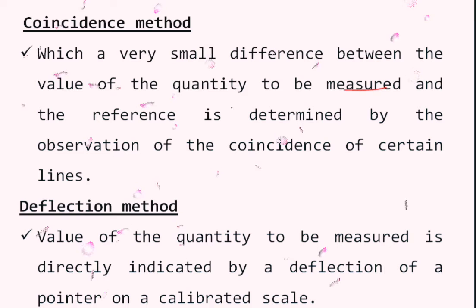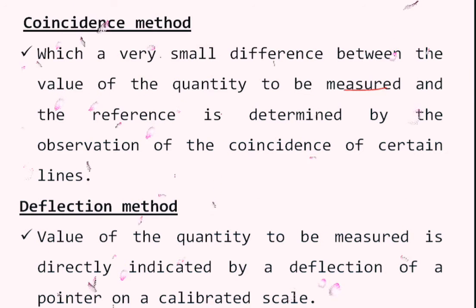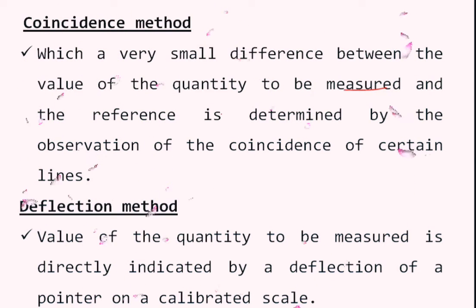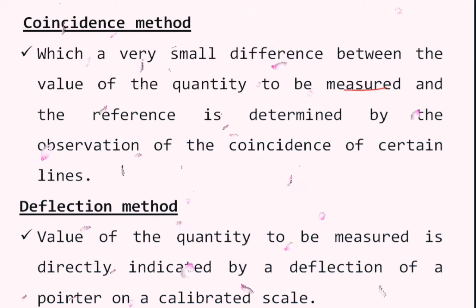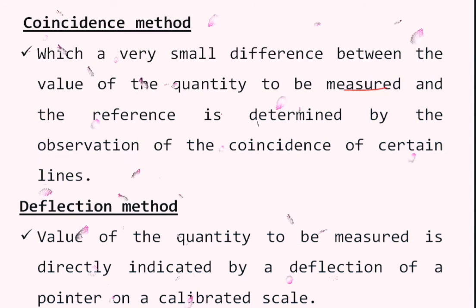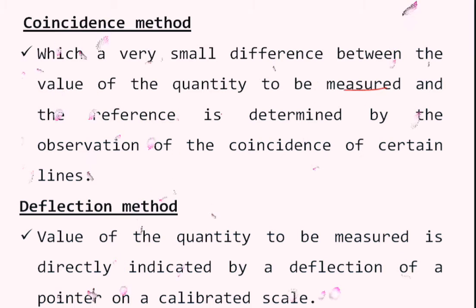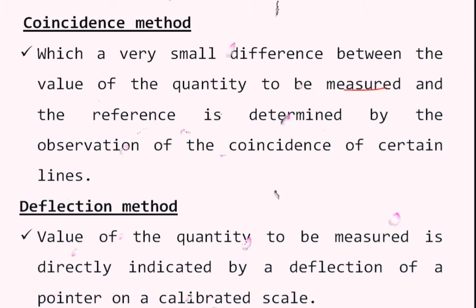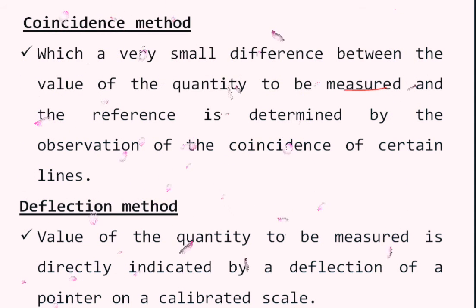The coincidence method involves identifying a very small difference between the value of the quantity to be measured and a reference. For example, with a vernier caliper measuring the length of a component, there are two scales — the main scale and vernier scale. You first read the main scale, then find which vernier scale line coincides with a main scale line and add that value to get accurate results.